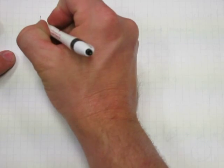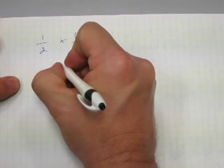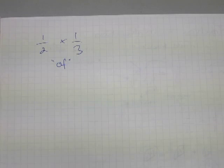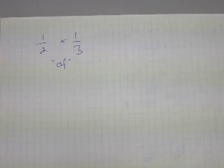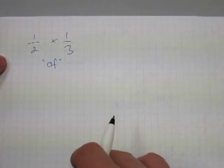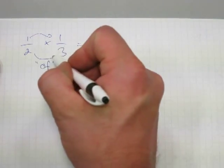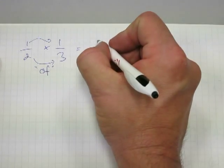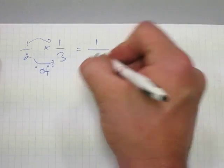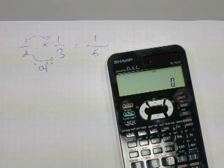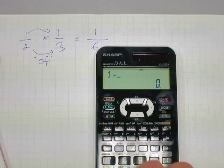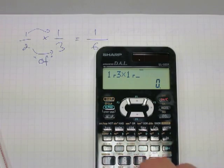Now let's do fraction multiplication by a fraction. For example, what's one-half of one-third? In spoken language, the word 'of' typically stands in for multiplication. To do this, you multiply the top with the top and the bottom with the bottom — numerator with numerator, denominator with denominator. One times one is one, and two times three is six, giving one-sixth.